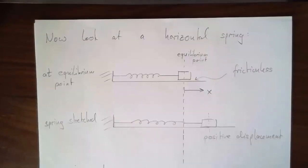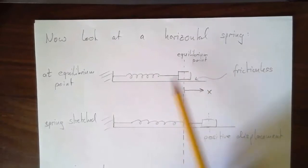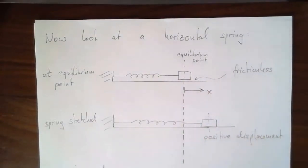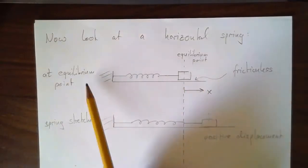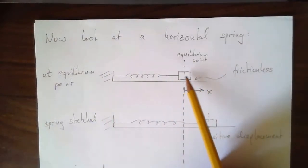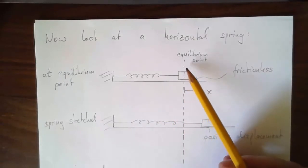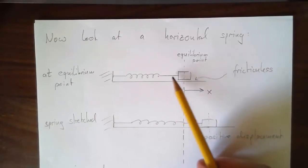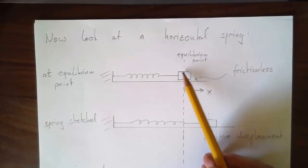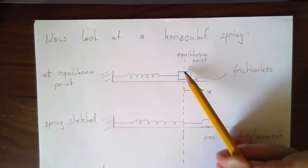Now let's look at a horizontal spring. One end is fixed, and the other end has a mass that can slide back and forth on a frictionless surface. When the spring is at its natural length — neither squished nor stretched — we call that the equilibrium point, because there is no net horizontal force on the mass at that position.